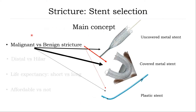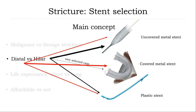The main concept for benign versus malignant strictures: for malignant distal strictures, you can use uncovered, covered, or plastic stent. For hilar lesions, you use only uncovered stent and plastic stent. In hilar location, covered stent is for very, very selected patients. For distal strictures, you can use all three stent types.